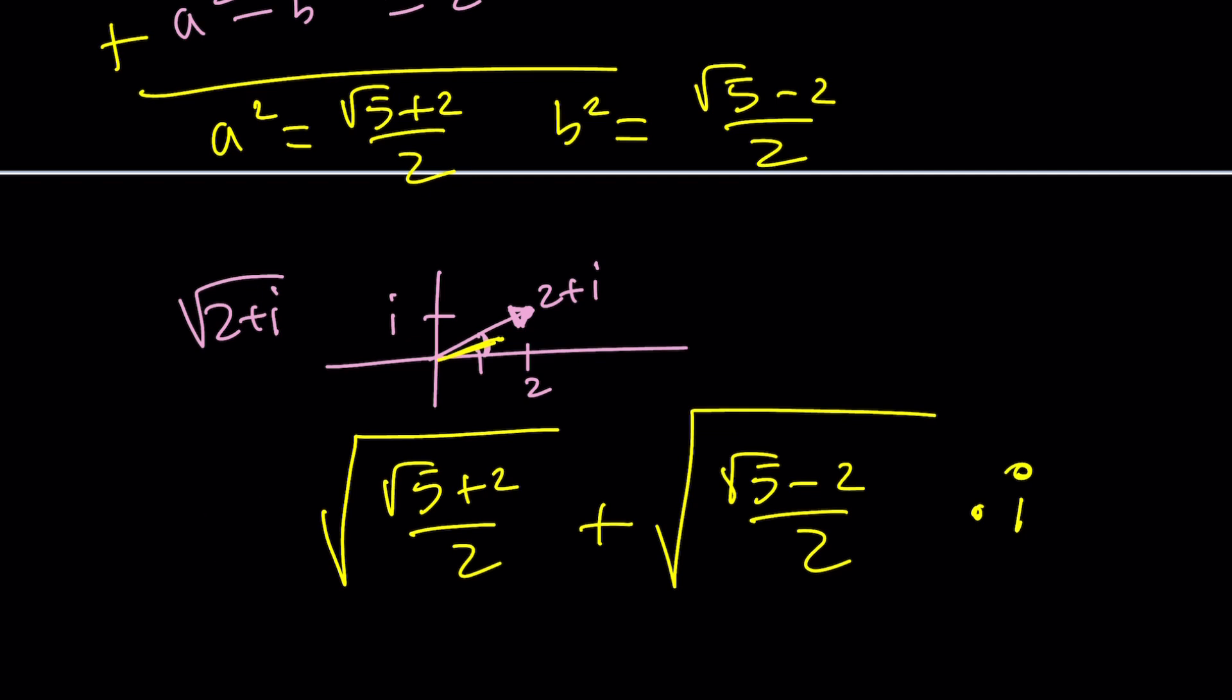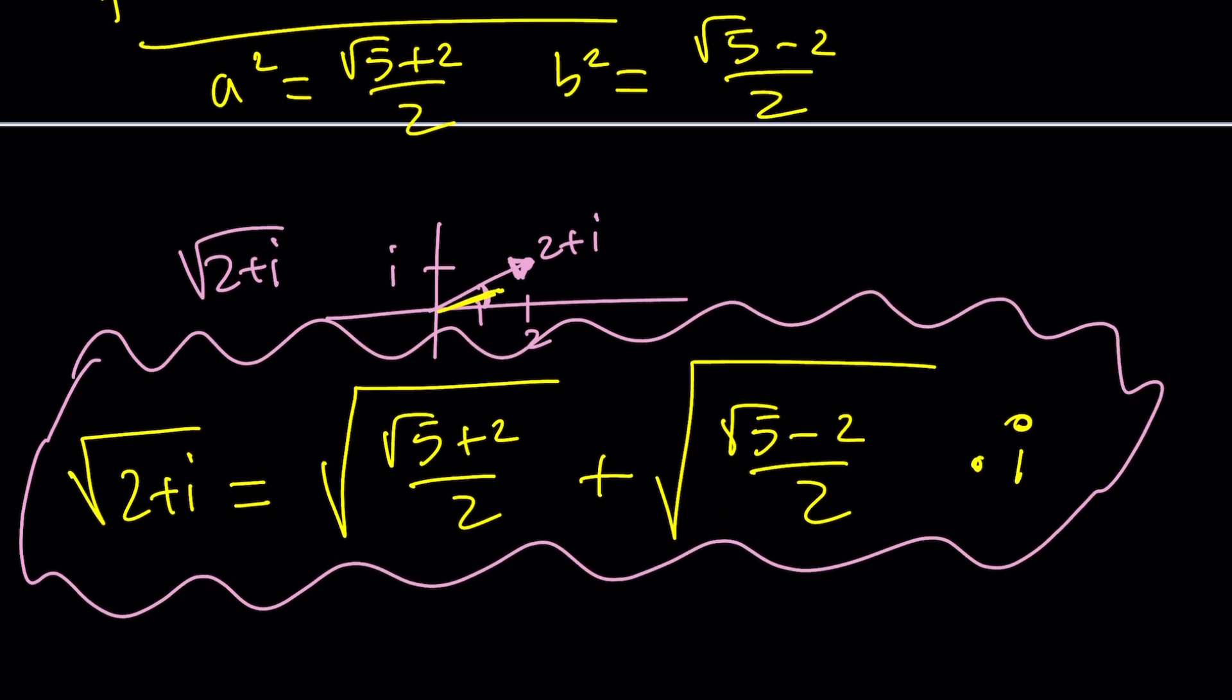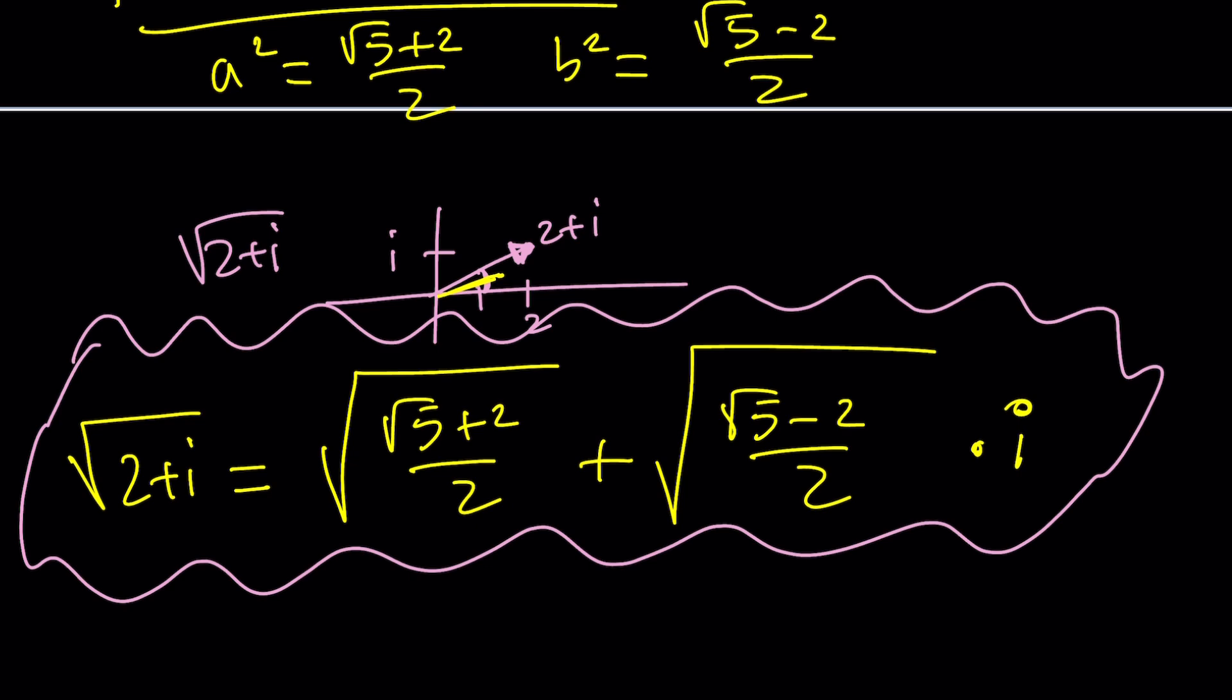So we can write this as the square root of root 5 plus 2 over 2 plus i times the square root of root 5 minus 2 over 2. That's the square root of 2 plus i. If you don't believe that, you can go ahead and square it or use a calculator and verify the solution. You should definitely do that. And the other square root, because we were looking for the principal square root, the other one is just going to be the opposite of this. So you can put a minus sign here and minus sign here.